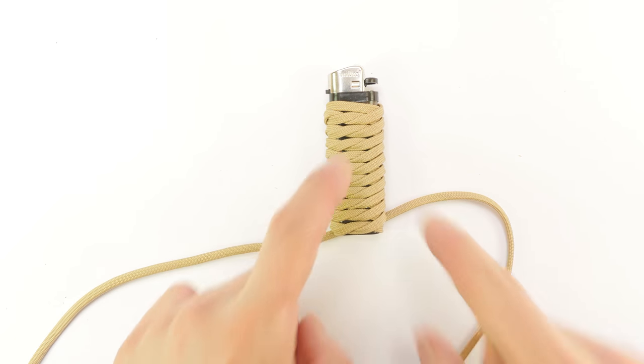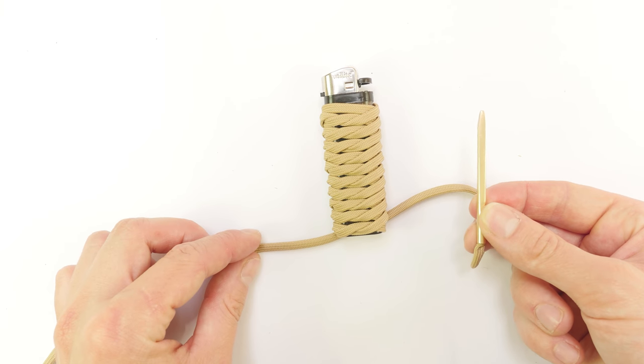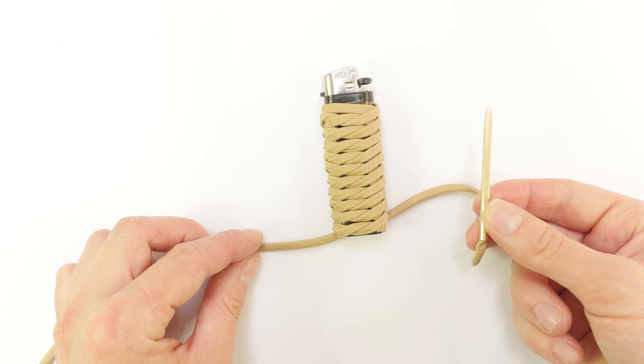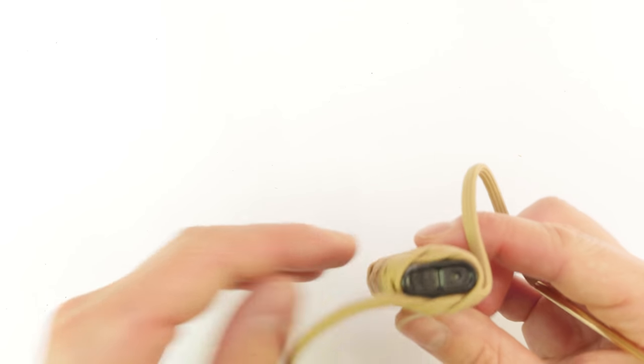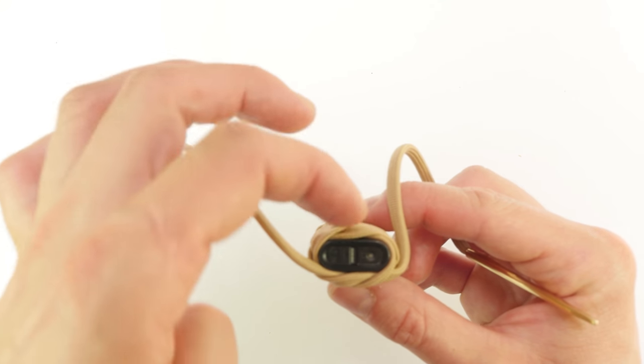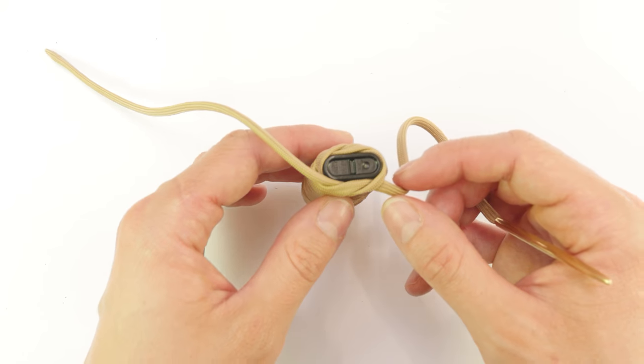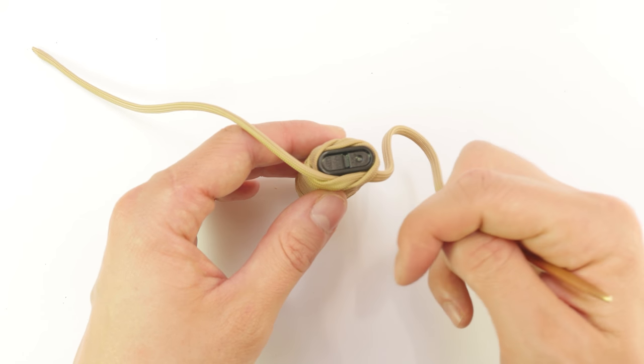Once you have covered your lighter using half knots, we're going to take one of the ends and attach a lacing needle to it. At the bottom you can see that one of the cords flows naturally towards this side, the top side, and one flows naturally towards this side, the bottom.